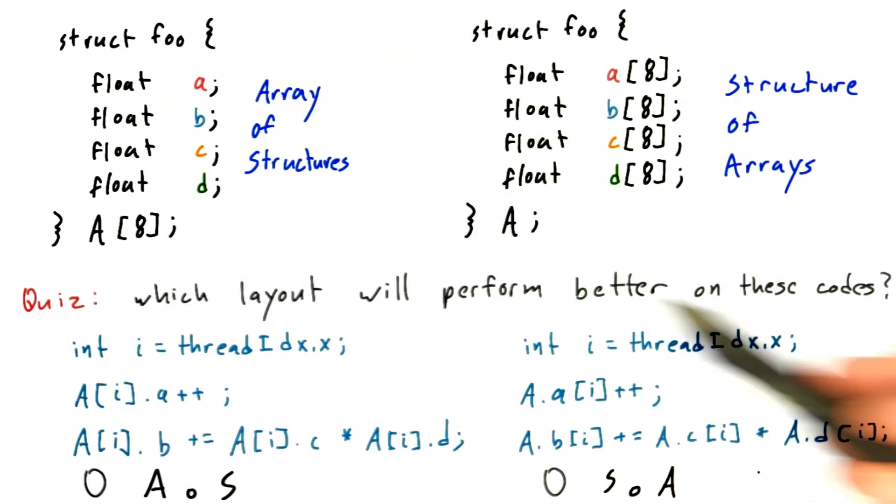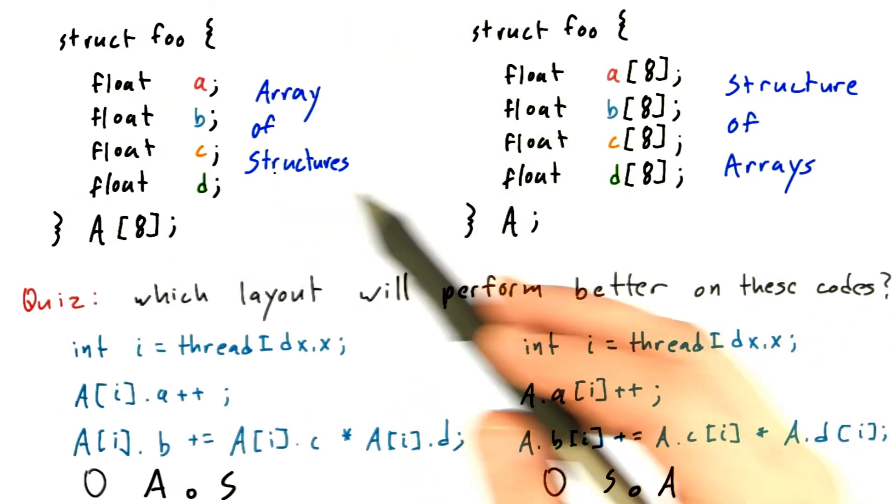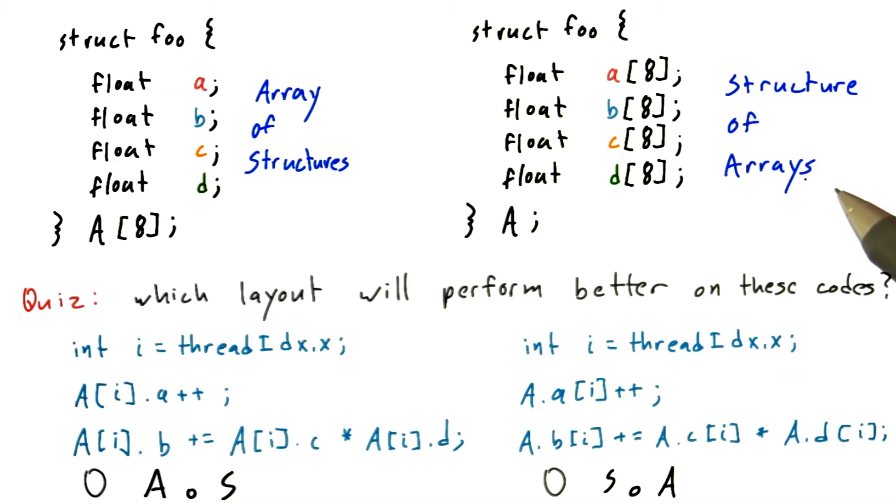So as a quick quiz, which of these two layouts, the array of structures, or AOS, or the structure of arrays, SOA, will perform better on the little code snippets I've given here?